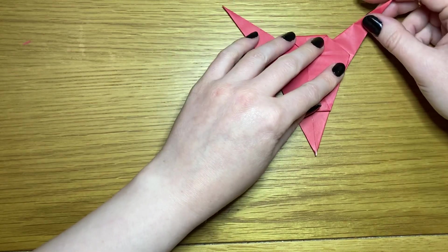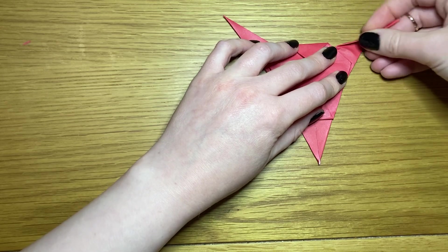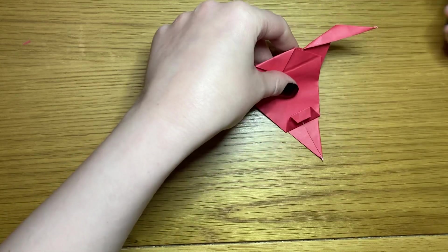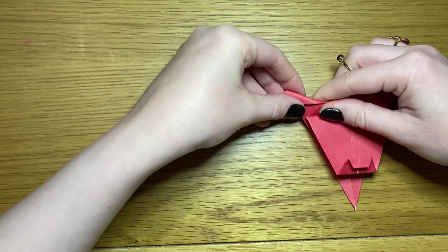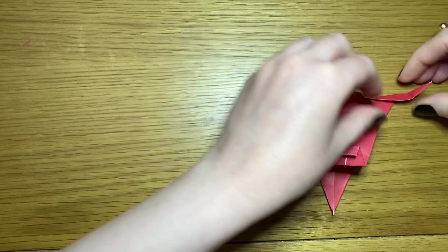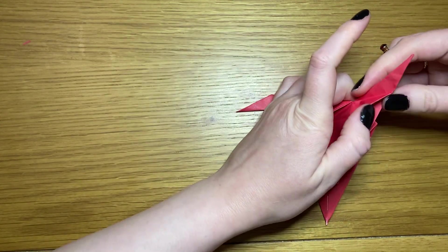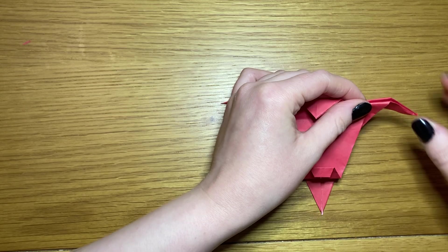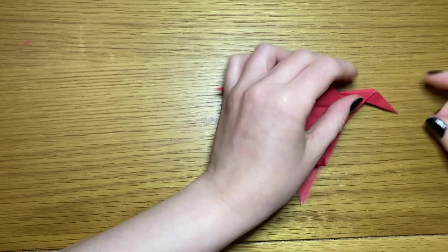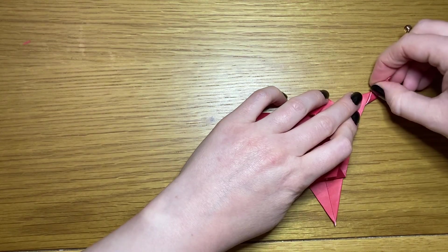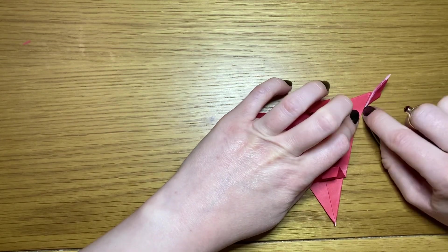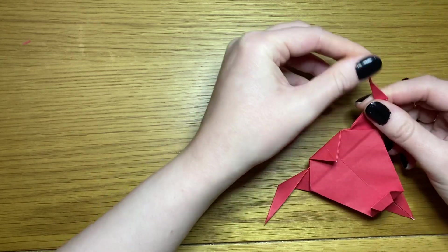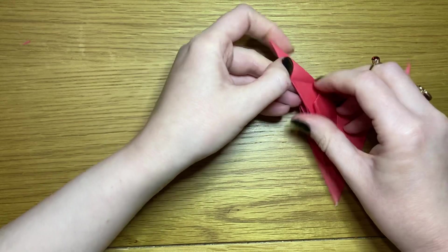Take your east antler there and fold it down like that, and do the same on your west side. Open out the east side and using that fold we've just made, bring it in and flat. Take this bit of the antler and fold it up along this crease here. Open it out and bring it up, and just repeat on your west antler.